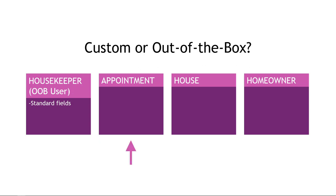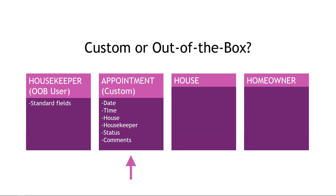For appointment, let's talk about the fields we need before we decide if we need a custom entity or not. We're going to need date, time, house, the housekeeper assigned, status — dirty, clean, etc. — and then comments. Now there is an appointment entity built into Power Apps for things like recording a phone call or a sales meeting, but for our scenario it's probably best to create this one as a custom entity.